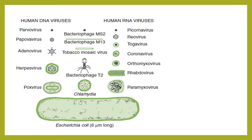This illustration compares the sizes of viruses relative to human DNA and RNA, using E. coli as a common reference — it is six micrometers in length. The smallest DNA virus is the parvovirus and the smallest RNA virus is the picornavirus. In between are bacteriophages and Chlamydia, one of the smallest bacteria, which is equal in size to the largest viruses: your poxvirus and paramyxovirus.